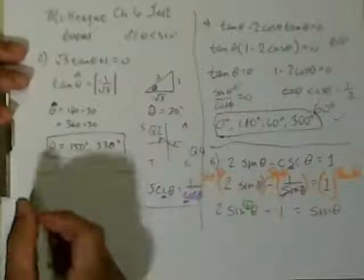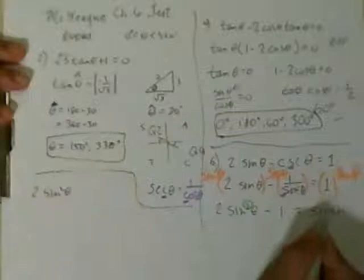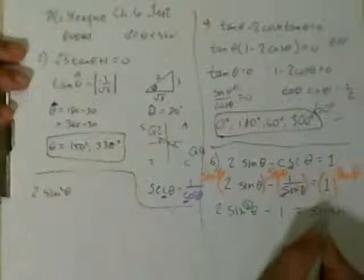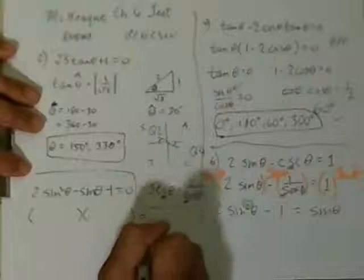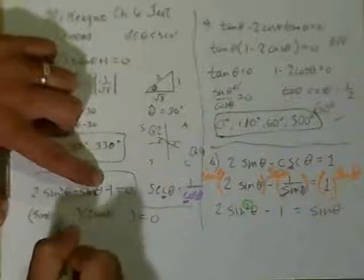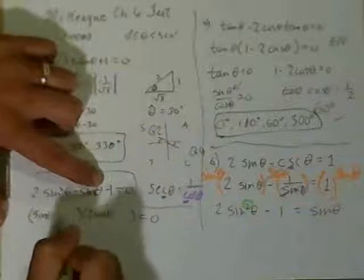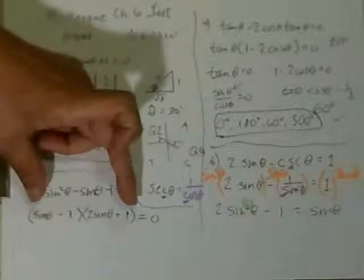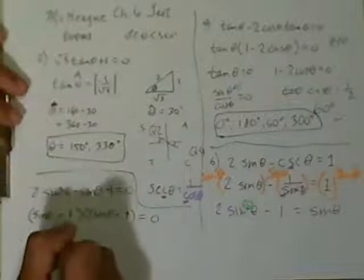So we bring everything over and set it equal to 0: 2 sine squared theta minus sine theta minus 1 equals 0. We need to factor this quadratic. Step 1: write the parentheses. Step 2: sine theta and 2 sine theta. Step 3: one factor gets a minus, the other a plus. Step 4: factors of 1 are only 1 and 1. Checking FOIL gives us plus sine theta minus 2 sine theta equals minus sine theta. The signs are correctly located.